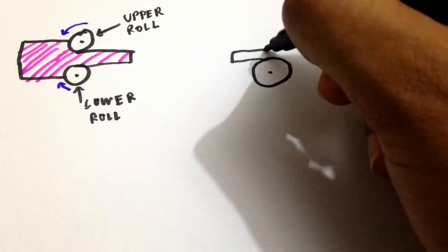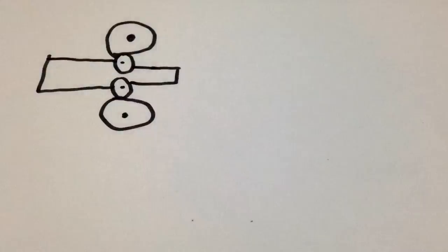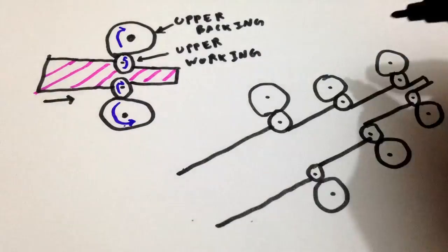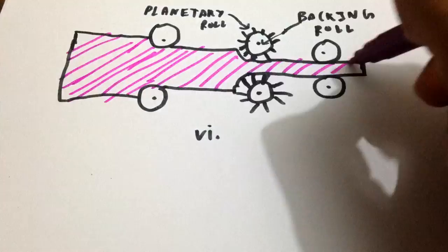First, two high rolling mill. Second, three high rolling mill. Third, four high rolling mill. Fourth, tandem rolling mill. Fifth, cluster rolling mill. Sixth, planetary rolling mill. Seventh, universal rolling mill.